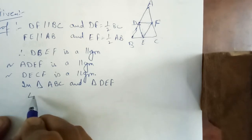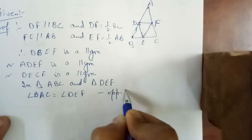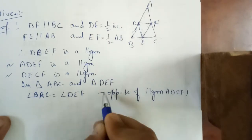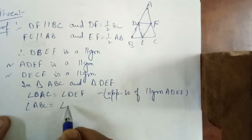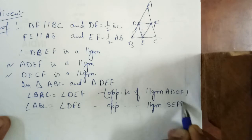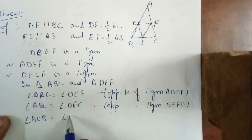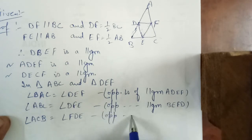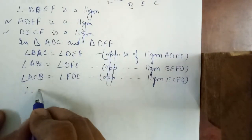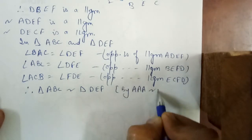Angle ABC equals angle DEF — opposite angles of parallelogram BDEF. Angle ACB equals angle DFE — opposite angles of parallelogram DCEF. And angle BAC equals angle FDE — opposite angles of the third parallelogram. Therefore, by Angle-Angle-Angle similarity rule, triangle ABC is similar to triangle DEF.